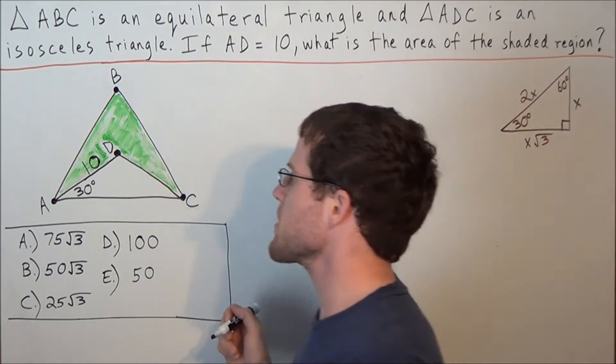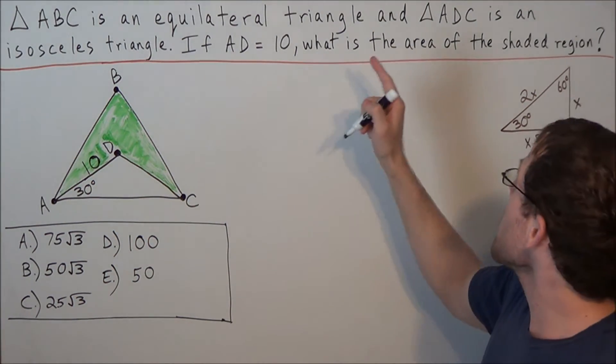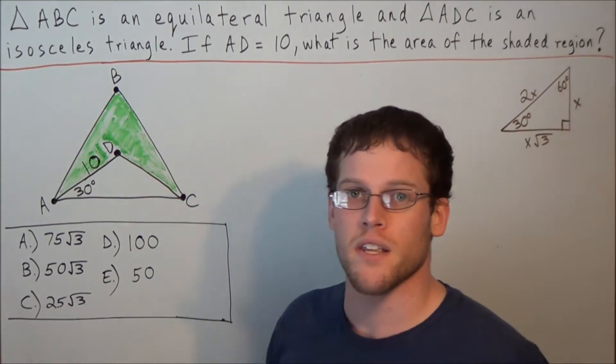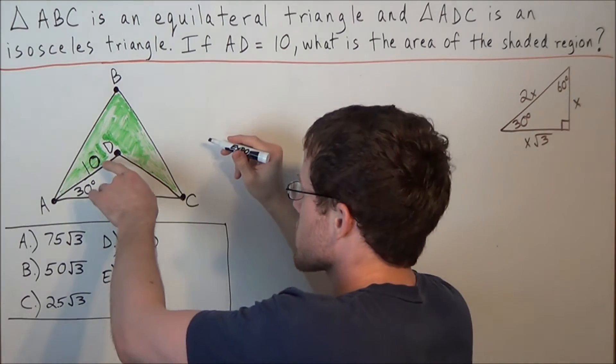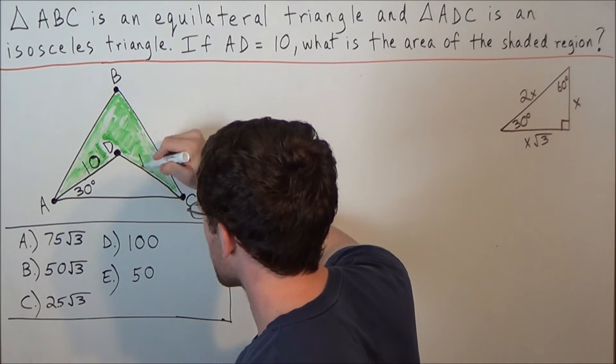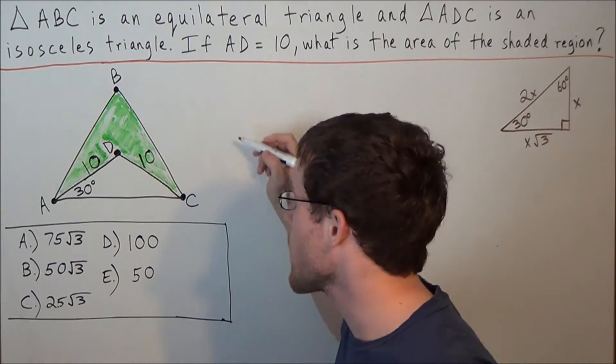Now we think about the other information that we were told. Since ADC is an isosceles triangle, we could go ahead and label other pieces. So if this side is 10, then the other side, DC, also has to be 10, because an isosceles triangle has two congruent sides.